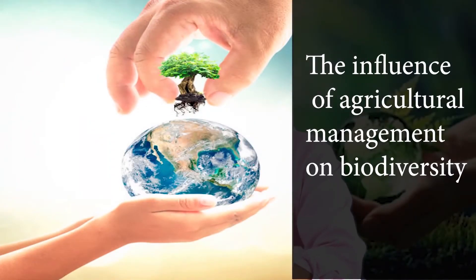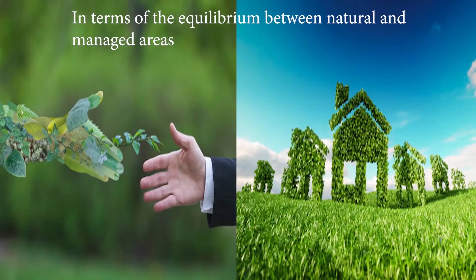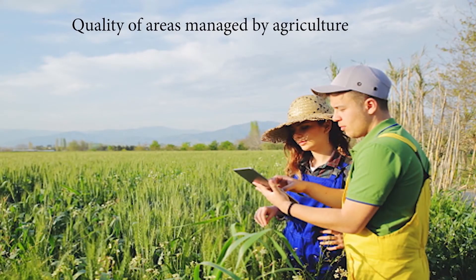If conservation of biodiversity is to be successful based on protection of the existing natural habitats, it will also require recognition of the remainder of a country's area. Agricultural regions of numerous countries are over 2,000 years old. Over time, a large number of wild species have become adapted to these landscapes, becoming almost entirely dependent on secondary and primarily agricultural habitats to survive. Studies have quantified the influence of agricultural management on biodiversity.